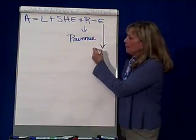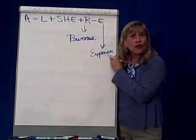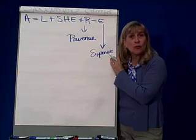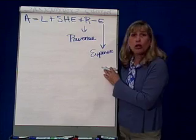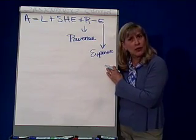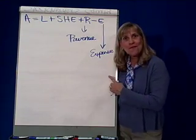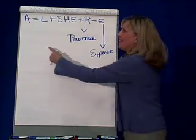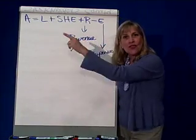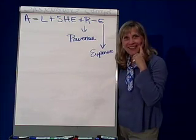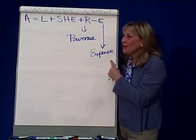Expenses are all the resources that you've used or consumed in order to generate that revenue. Expenses are called expired or consumed resources, or expired or consumed costs. Remember that food in your refrigerator that was an asset, which had future potential value? As soon as you stick that food in your mouth, it becomes expired or consumed — it becomes an expense.